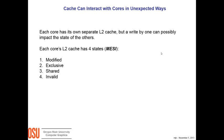We talked about what cache is before, but let's talk a little bit about how it actually works. Internally, each cache has something called MESI — its four states. The four states are modified, exclusive, shared, and invalid. Each core has its own separate L2 cache, and each one of those L2 caches is in one of these four states. Now let's see what the states actually do.